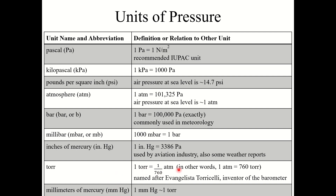One Torr is equal to 1/760 of an atmosphere, or in other words, one atmosphere equals 760 Torr. It should also be noted that a millimeter of mercury and a Torr have the same magnitude, so one atmosphere also equals 760 millimeters of mercury.